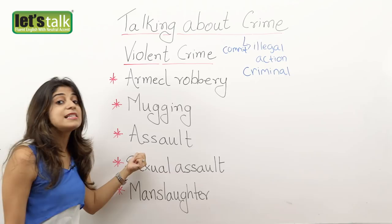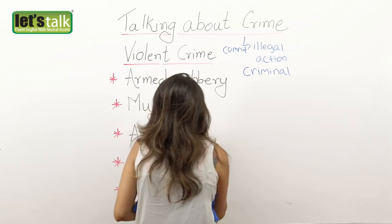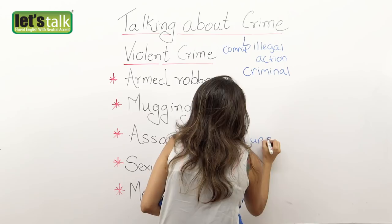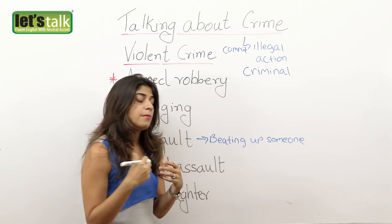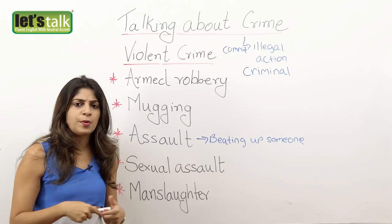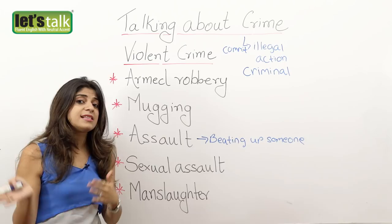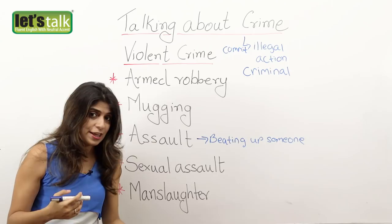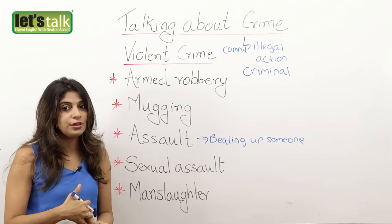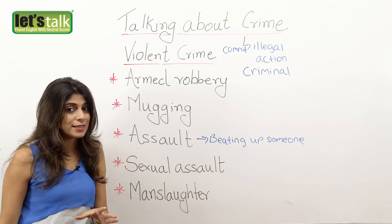The next one is assault. Assault is beating up someone. Maybe someone gets into a fight and beats the other person in a very violent manner — that means he assaulted that person. Maybe you got into a road rage and you assaulted that person because you got really violent and started beating him up. That is assaulting.